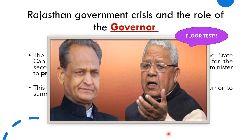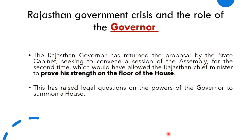Generally, if the government is in an instability situation, they ask a little time for the floor test. But Ashok Gehlot was very confident and knew they would prove their majority. Normally, the governor calls a floor test, the chief minister proves majority, and the political crisis gets resolved. But there is a twist: the governor was not convening the assembly session. The government sent the proposal twice, advising the governor to call the assembly session so the chief minister could prove strength on the floor, but the governor returned it both times.